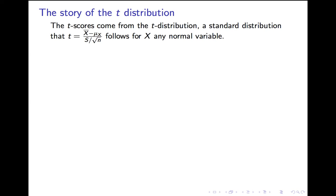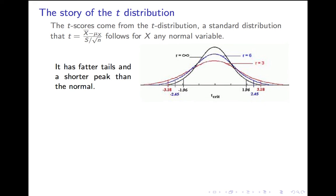First, a little more about the t-score. It comes from the t-distribution. In statistics, it's conventional to refer to probability distributions by letters: z corresponds to the normal distribution, t is the t-distribution. Technically, it's the distribution you get if you take a normal variable, compute x-bar, and then take (x-bar minus the mean) over (the sample standard deviation over the square root of n). The t-distribution looks much like the normal distribution but with fatter tails and a shorter peak.